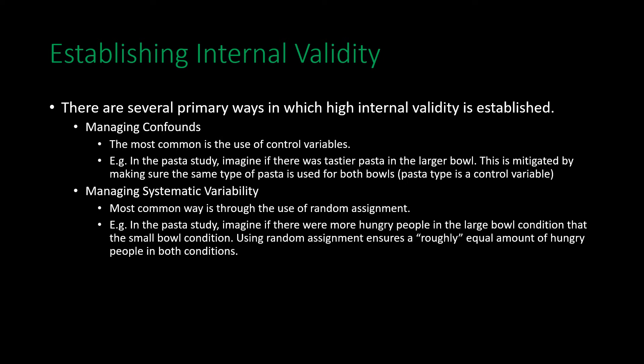The most common way of dealing with systematic variability is through random assignment. In the pasta study, imagine some people in the large bowl condition were more hungry than those in the small bowl condition — that could explain why they ate more. In this case, hunger would be systematically varying with the independent variable of bowl size. Note this doesn't have to happen on purpose — it can occur by chance or due to some unknown variable, including selection effects.